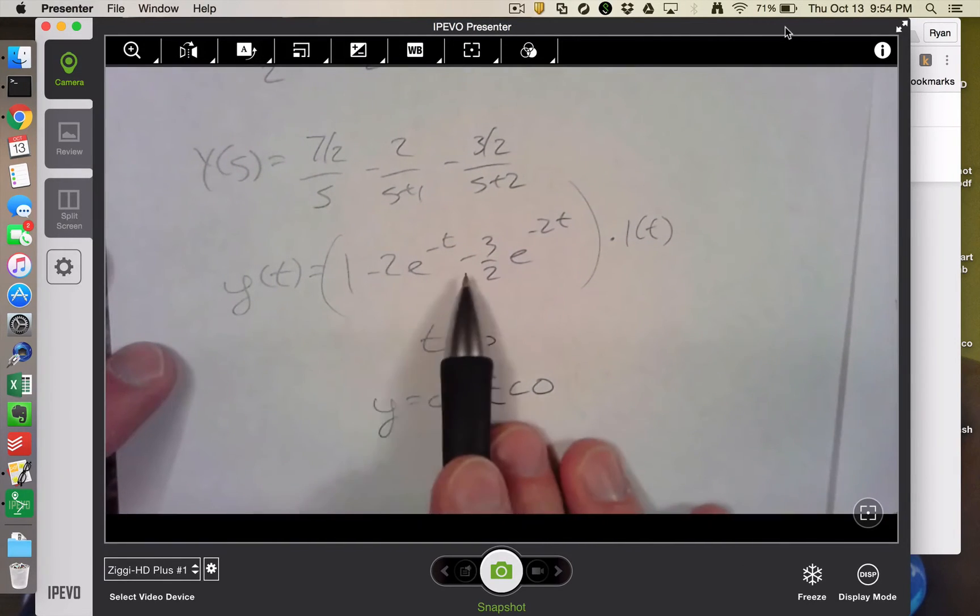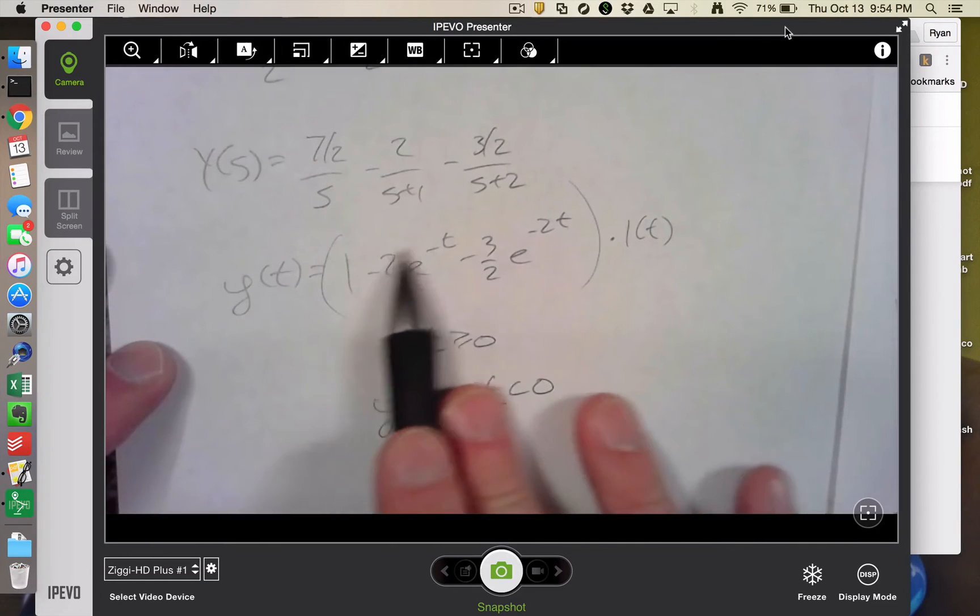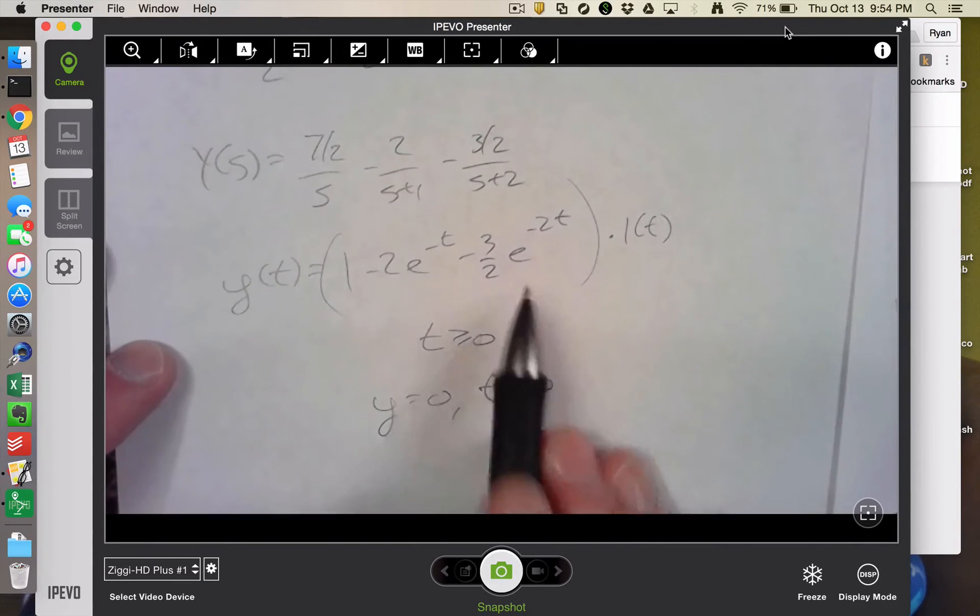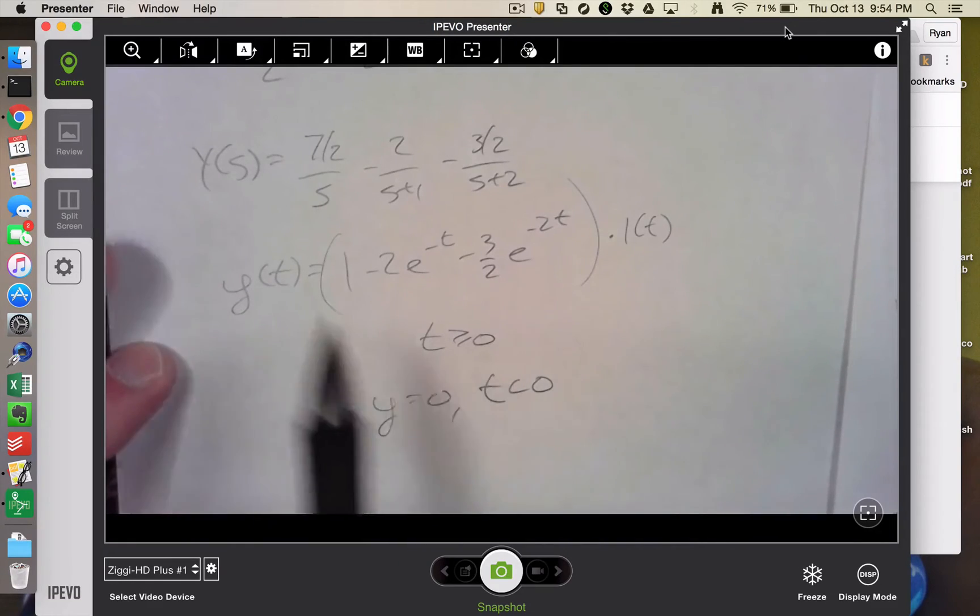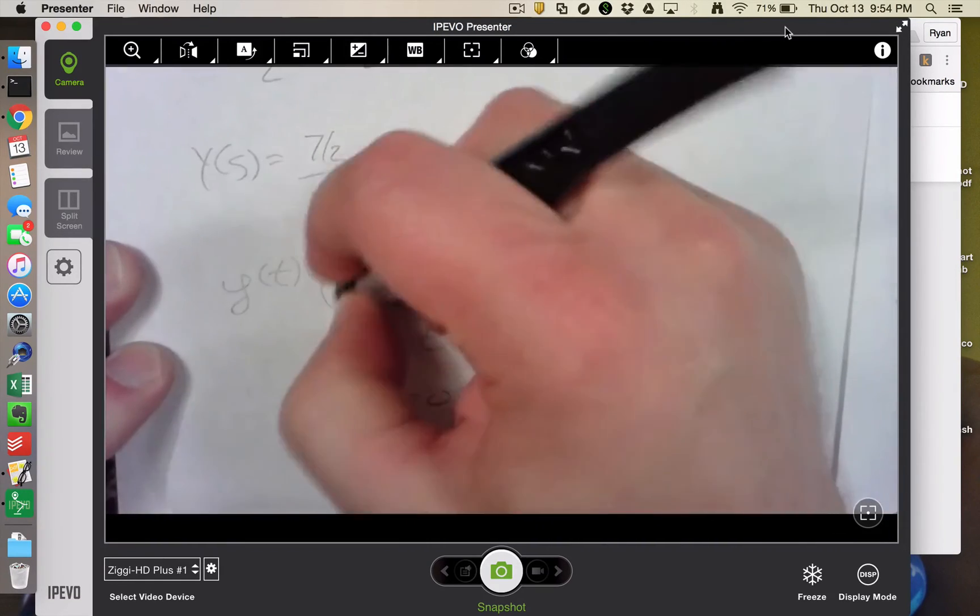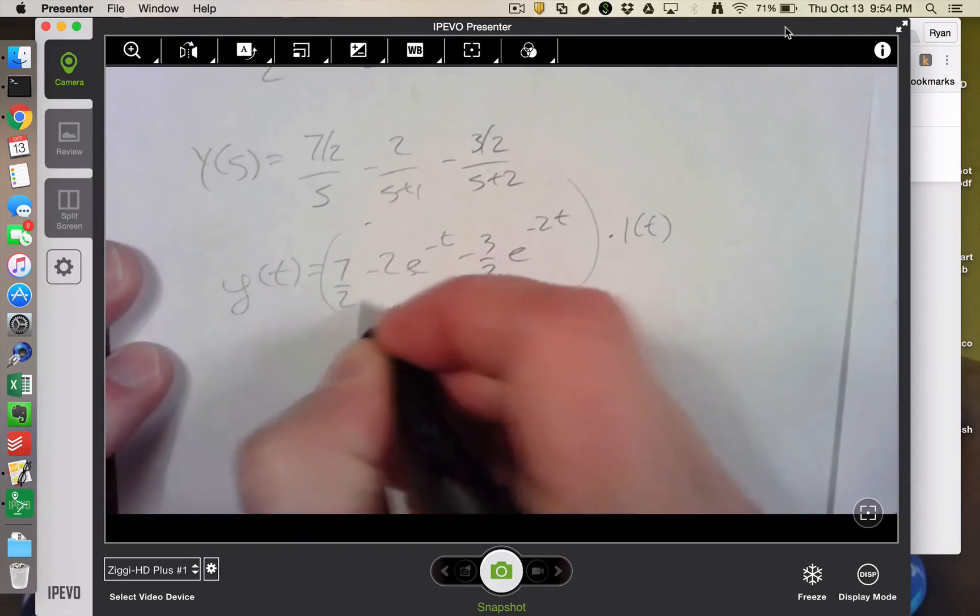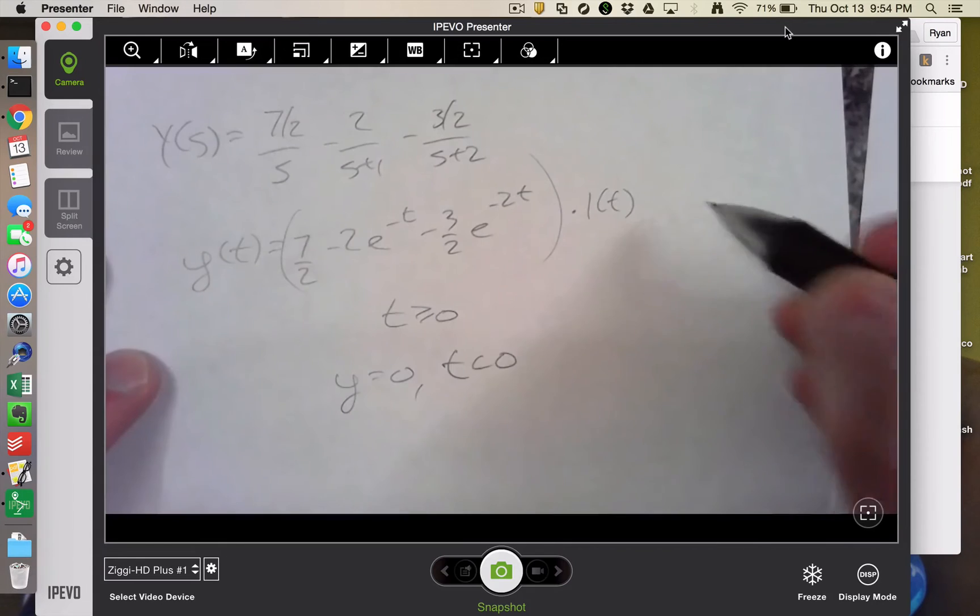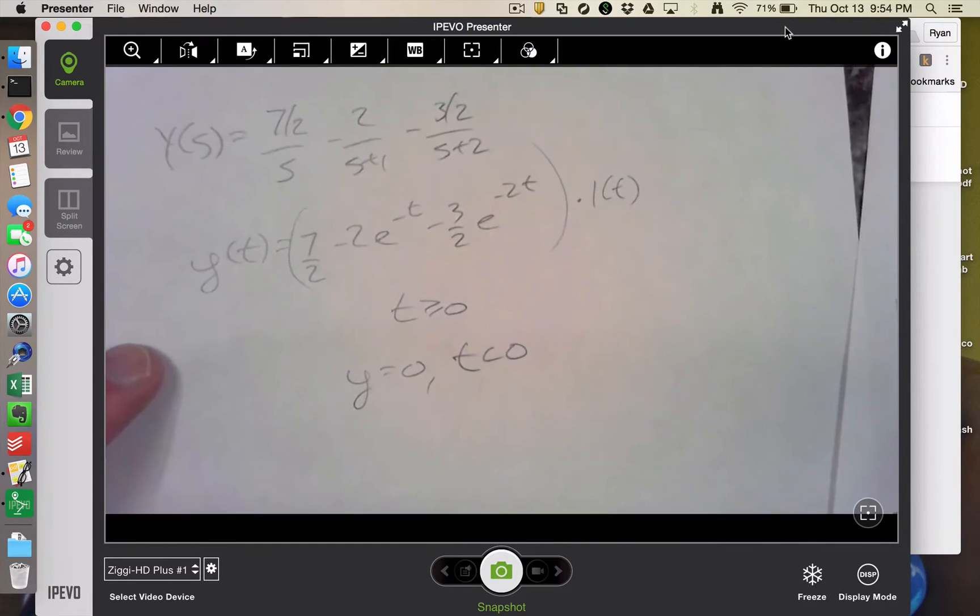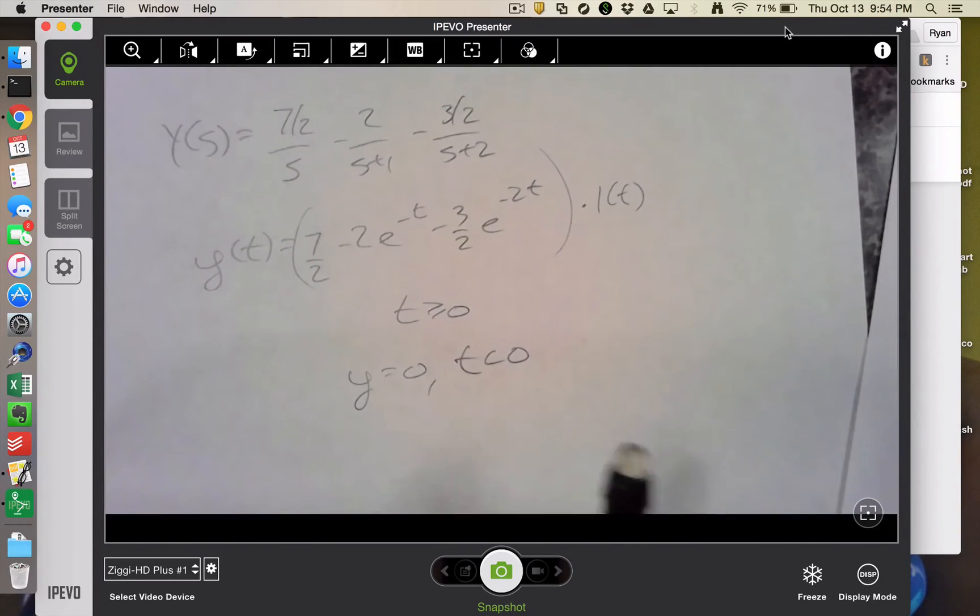So the question is, if this is true, how do we verify that? Oh, this isn't a 1. This looks all messed up. This is a 7 halves. Okay. So I claim this is correct partial fraction expansion algebra. How do I verify it? And in just a second, I'll show you how to verify that using ipython and the python control module.